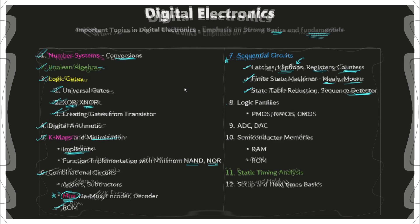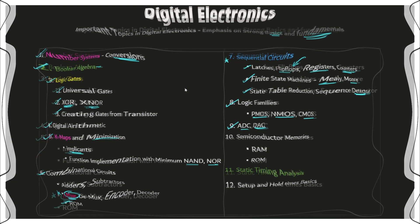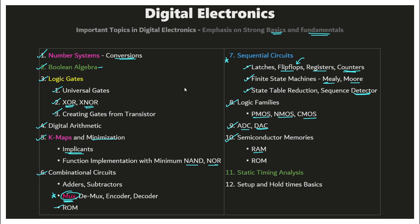You might get questions in interviews on FSMs. Next, we have logic families — PMOS, NMOS, and CMOS. Have a basic understanding of all three and see how many transistors are used in each family. Focus on data converters — analog to digital and digital to analog. Also focus on semiconductor memories: SRAM, DRAM, and ROM. Static timing analysis is also very important — you might get interview questions on setup and hold times and the basics of static timing analysis.